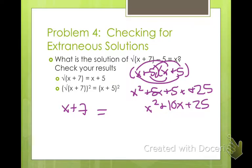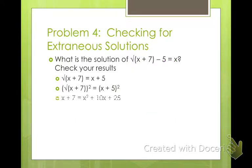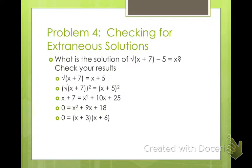Now move everything to one side: x squared plus 9x plus 18. Is that factorable? Yes — we get x plus 3 times x plus 6, set each factor equal to 0, giving solutions x equals negative 6 and x equals negative 3.